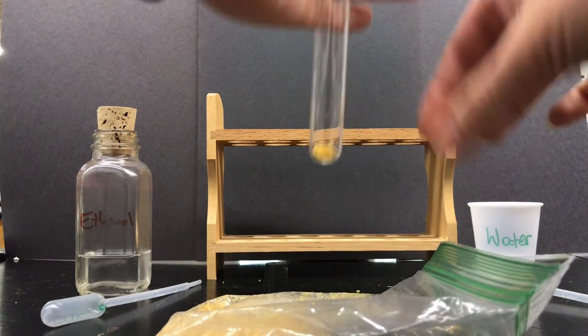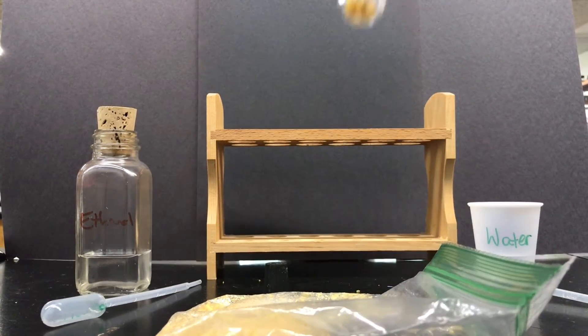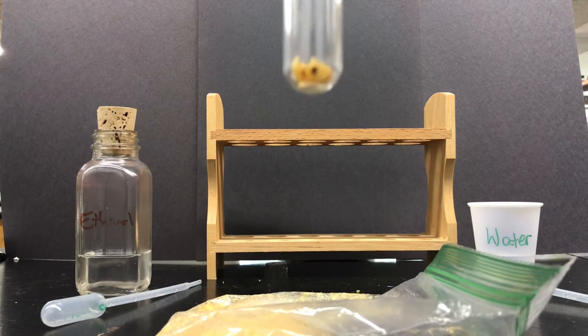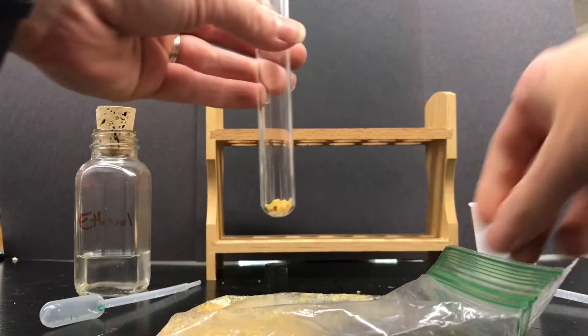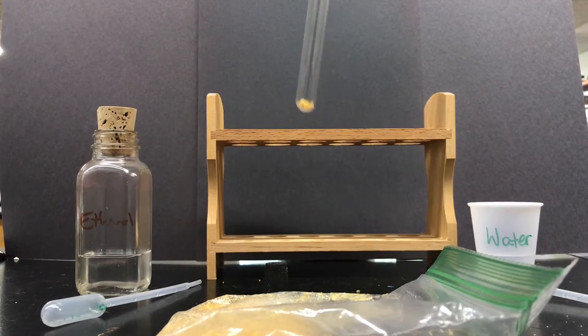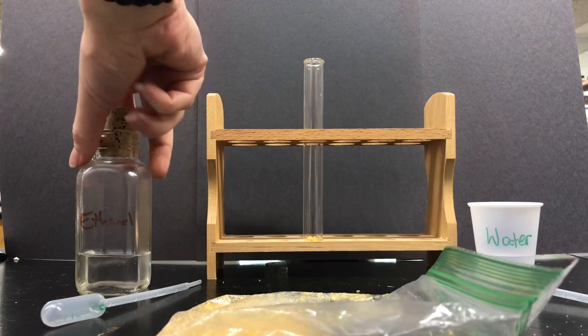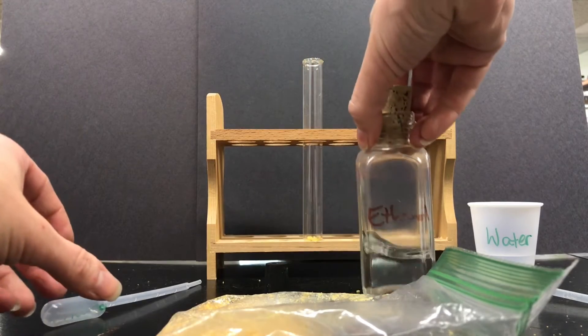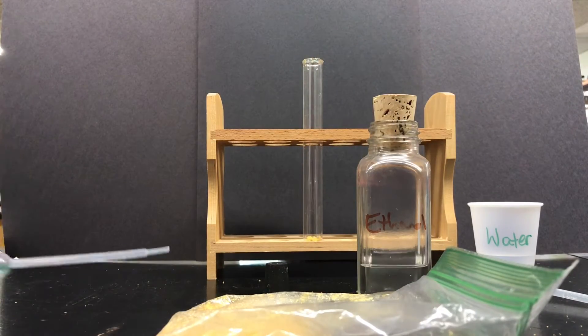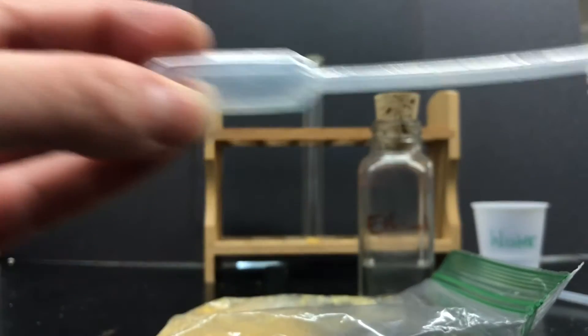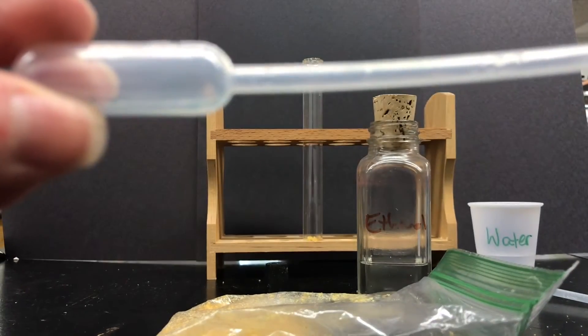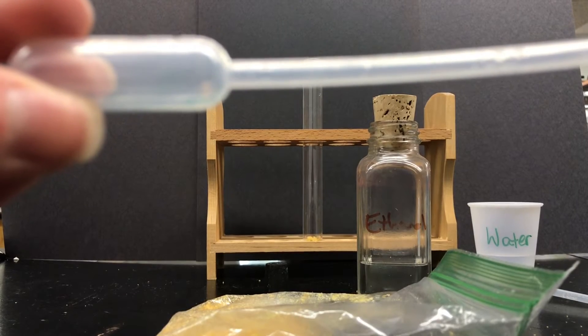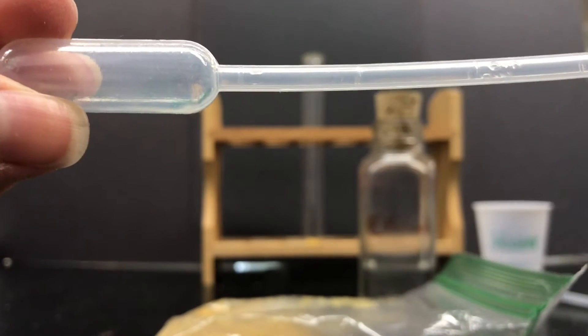some ethanol. You're going to add two milliliters of ethanol. If you look closely at your pipette there is a line here that says number one so that's one milliliter. So we're going to fill our pipette squeeze your pipette